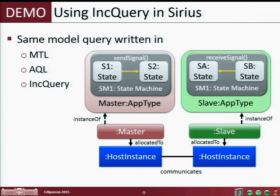The pattern we are executing here is a little bit more complicated. We have two application types, and in both applications we have state machines. Within the state machines there are transitions which have special commands — send signal and receive signal. If these application types have instances which are allocated to host instances (execution nodes) that have a 'communicates' edge, then I would like to have a specific edge between the application types. As you can see, it's not so easy to navigate through this whole bunch of EMF objects in order to see that this relation really holds.